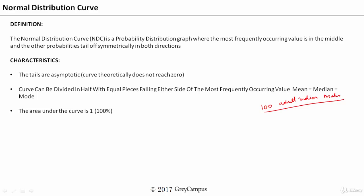Is it possible for us to predict? Yes, it is possible, because you find that an average adult Indian male's height will be between 5 feet to 6 feet. Or, if you calculate in centimeters, the minimum may be 150 and maximum may be 185 centimeters.